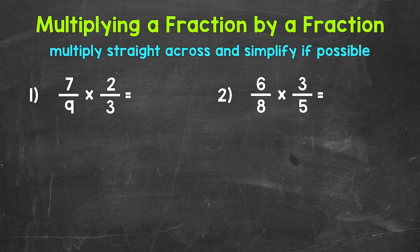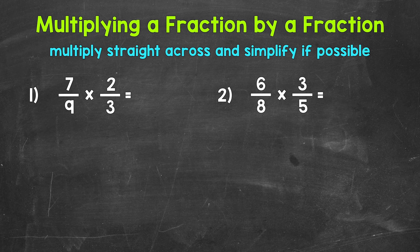Let's start by taking a look at multiplying fractions by fractions. Simply put, all we need to do is multiply straight across — multiply the numerators, the top numbers, and then multiply the denominators, the bottom numbers. Once we multiply, we can simplify if possible. Let's jump into our examples, starting with number 1, where we have 7 ninths times 2 thirds.